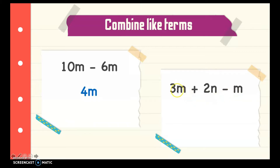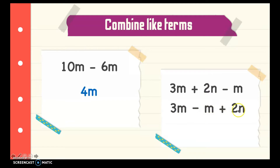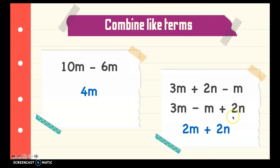Another example: 3m plus 2m plus 2n minus m. We can combine the m terms: 3m minus m plus 2m. The lone m here has a coefficient of 1 — we just write the variable without writing the 1, since any value multiplied by 1 equals itself. So 3 minus 1 is 2, giving us 2m, then plus 2m, so 2m plus 2m. Then we copy the 2n term.